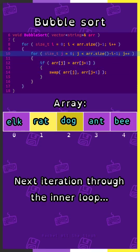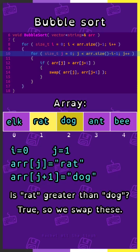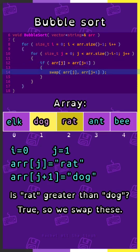Next iteration through the inner loop. j is 1, array sub j is rat, array sub j plus 1 is dog. Is rat greater than dog? True, so we swap these.